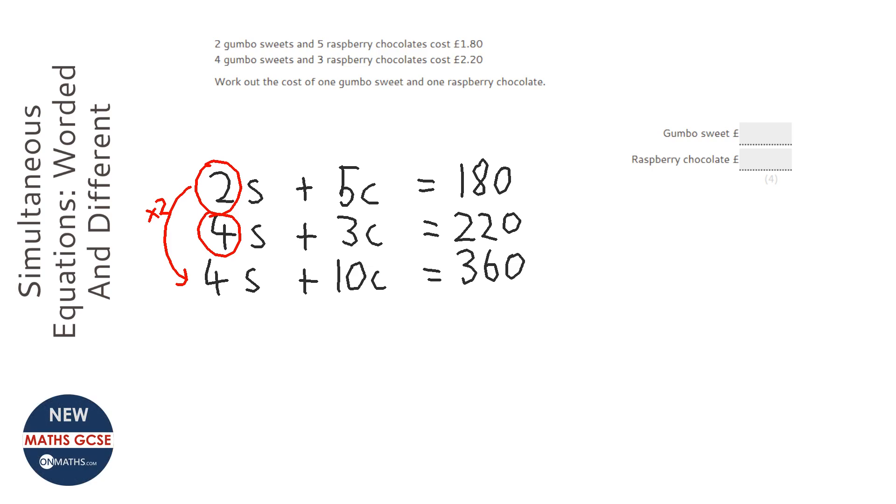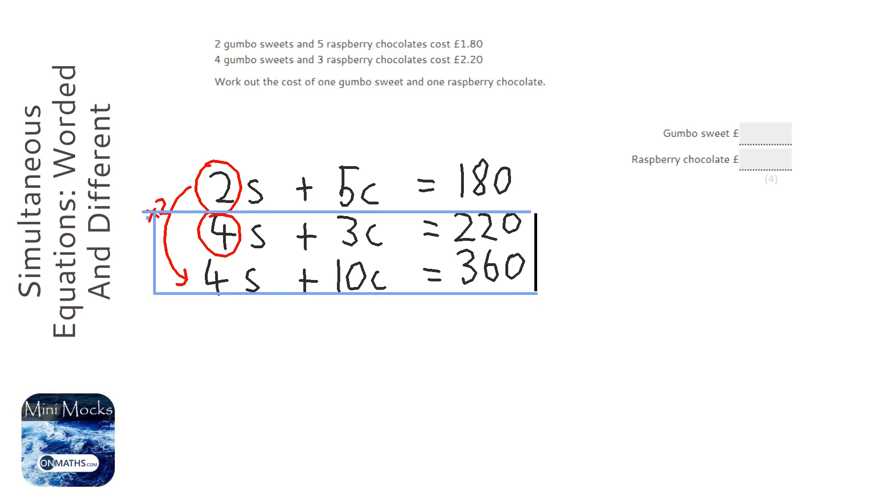To get rid of the S here, I'm just going to make this a bit clearer about where we're looking. Now to make things clearer, when I subtract—which I'm going to do to get rid of the 4S's—we're going to have a bit of a problem because everything's going to be negative. So sometimes it's a good idea just to copy down the first equation again.